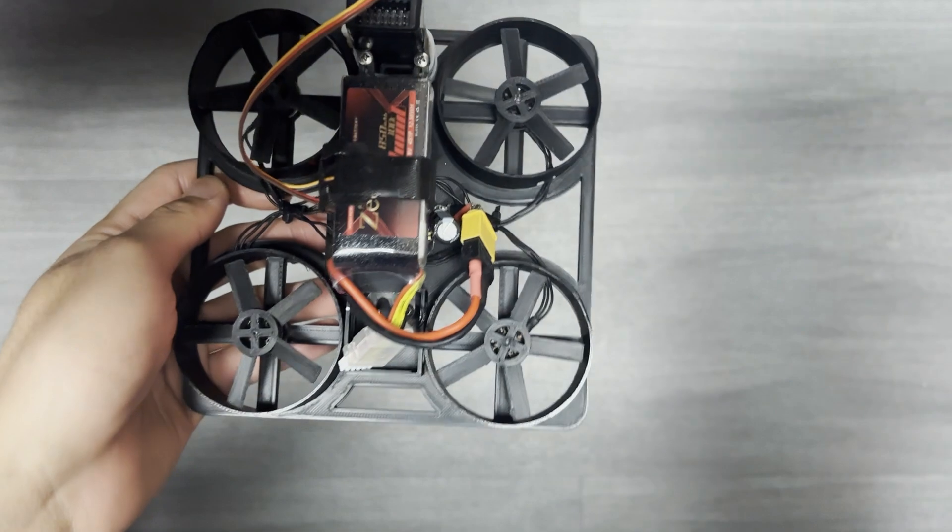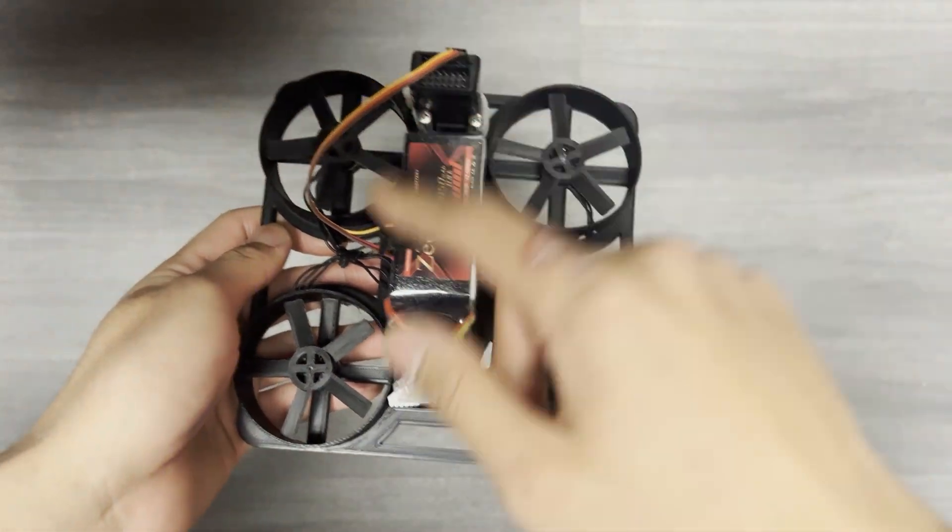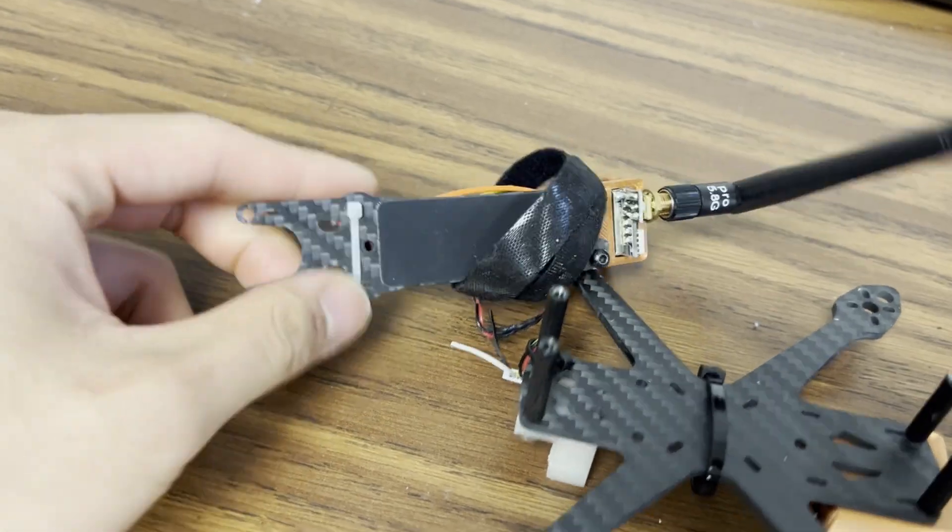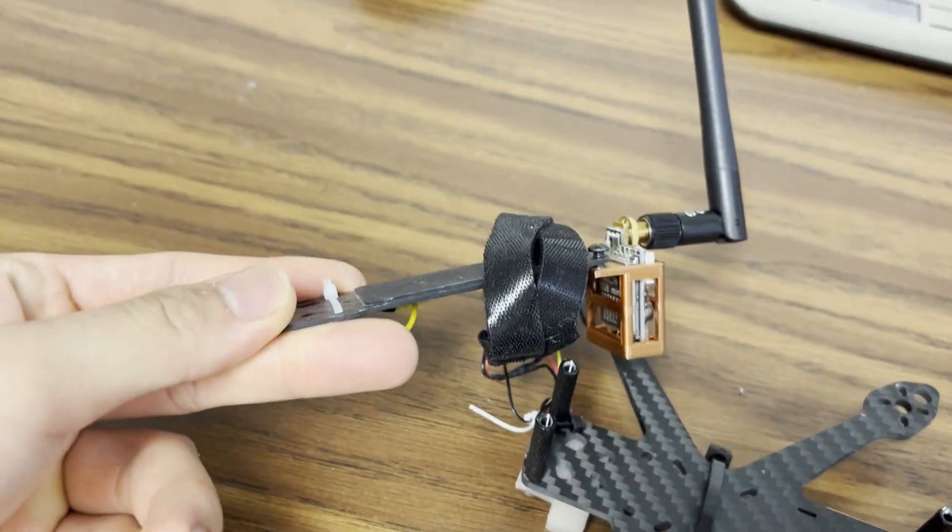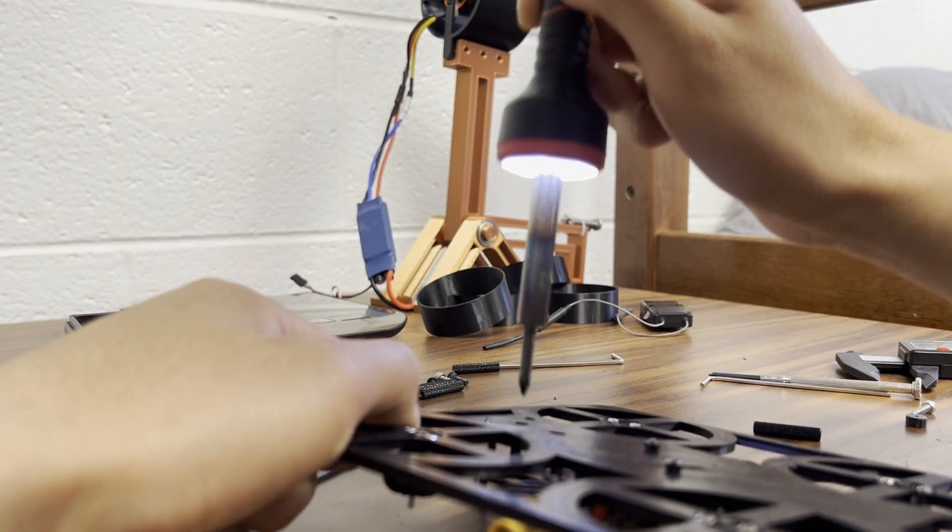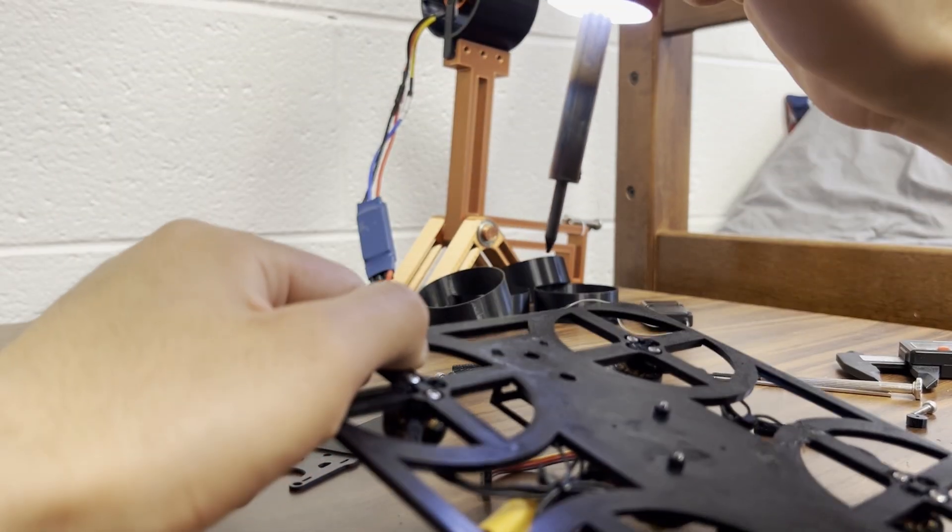However, by the time I had realized that I wanted to actually center the battery, I had already printed this bigger frame, and so I used a carbon fiber board and struts from my old 4S 3-inch whoop build that I made a video on a few months ago and just attached it to the frame.